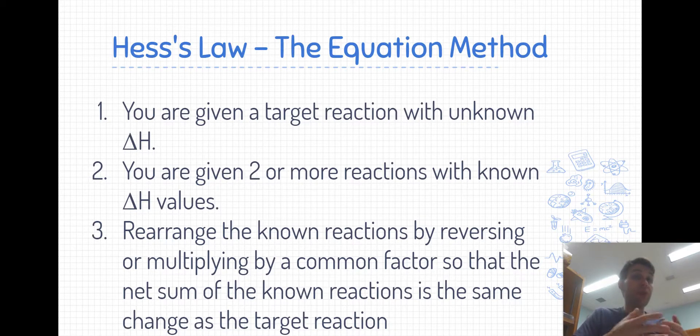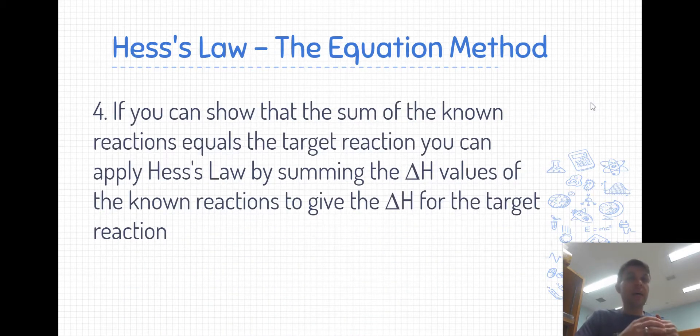Then we're going to rearrange those known reactions by reversing or multiplying by common factors so that the net sum of the known reactions is going to be the same change as the target reaction. And if we can show that the sum of the known reactions is equal to the target reaction, then we can apply Hess's law and sum up the delta H values of the known reaction to give the delta H for the target reaction.